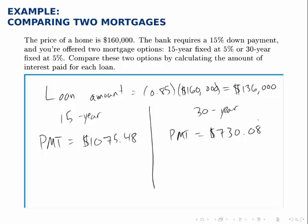At first, if you're looking at these two mortgages, the 30-year mortgage looks more attractive because the monthly payment is so much lower — if you can pay that much less each month it looks like a better option. But the problem is that over time the 30-year mortgage is going to require much more interest. So let's think about how much each of them will actually pay.